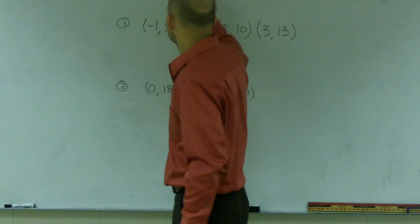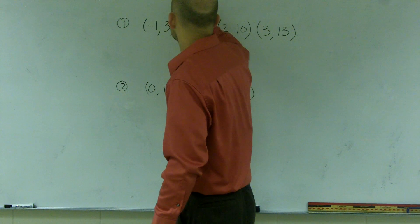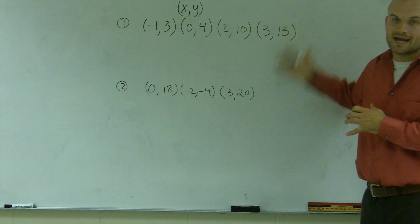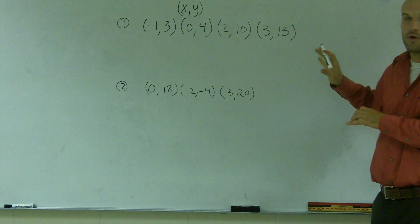And what we have is an ordered pair, remember, can be written as an x and a y. And when graphing, we can actually graph them on an x and y axis. So, that's exactly what all the ordered pairs are.